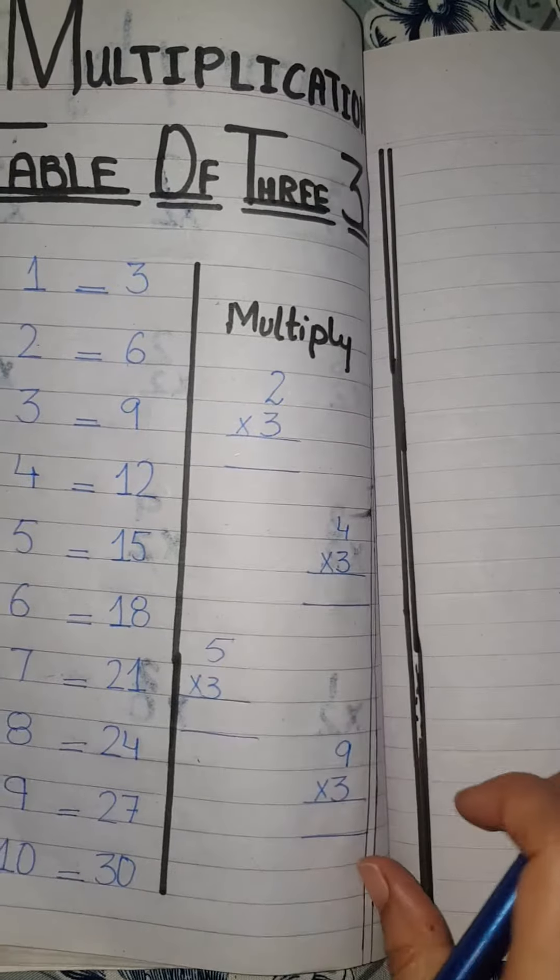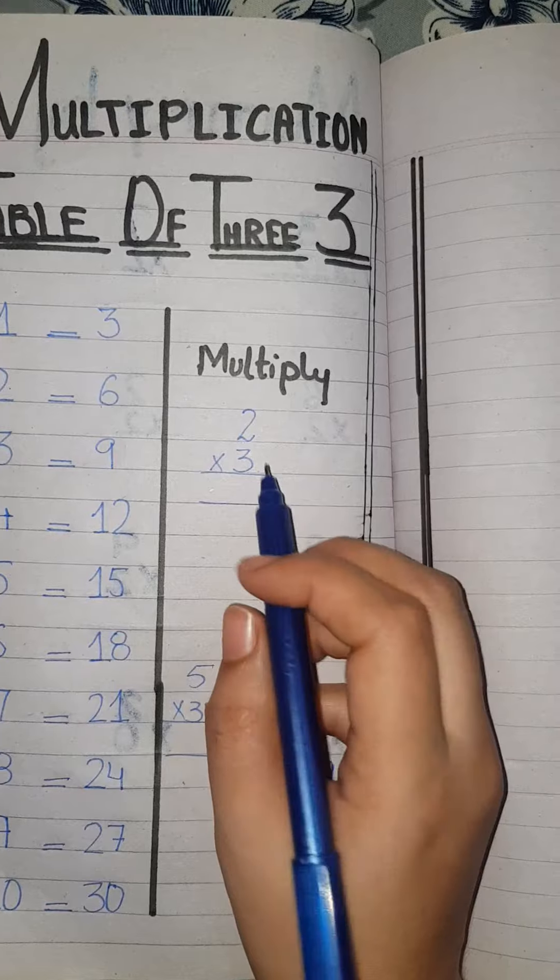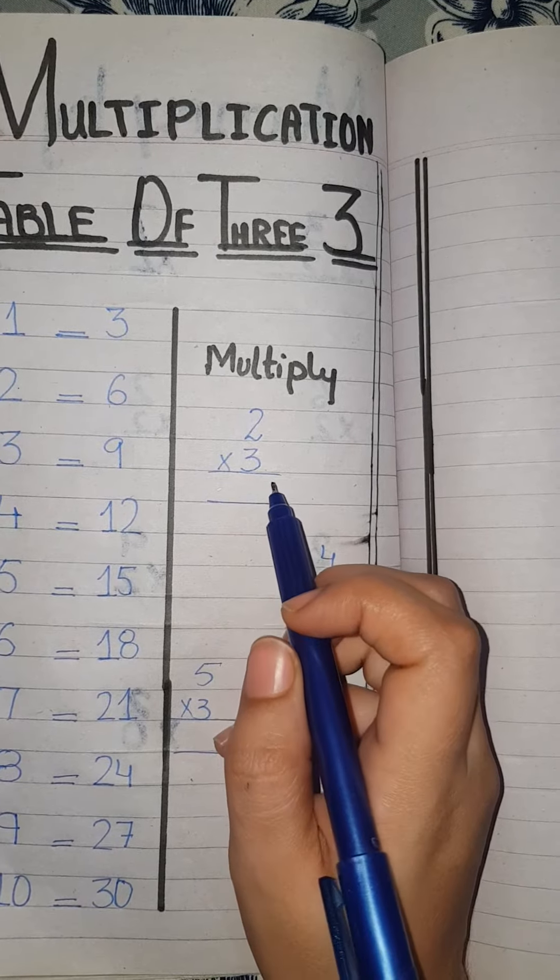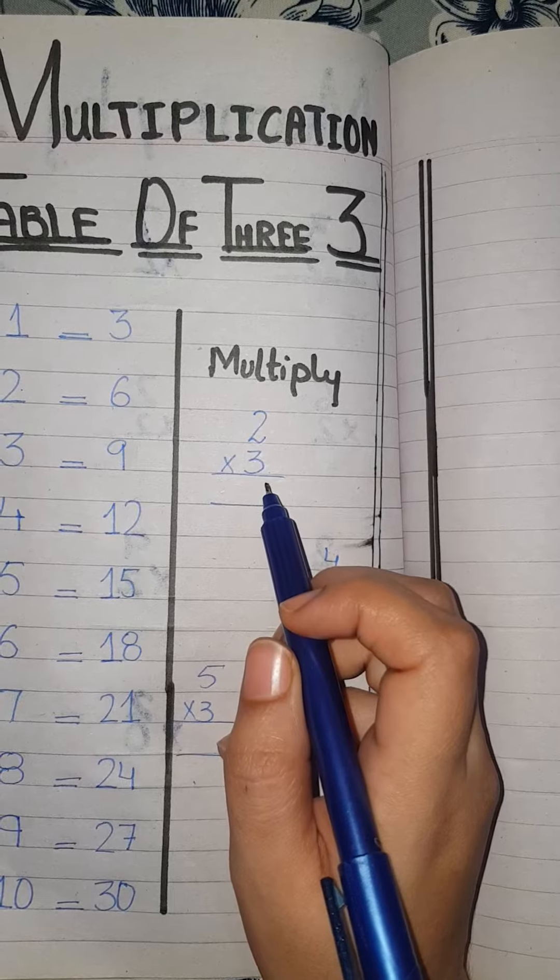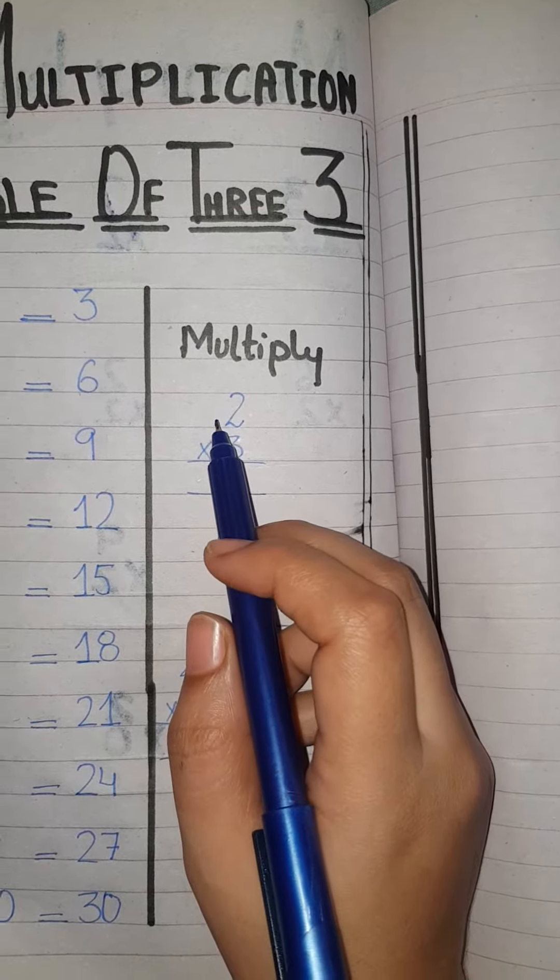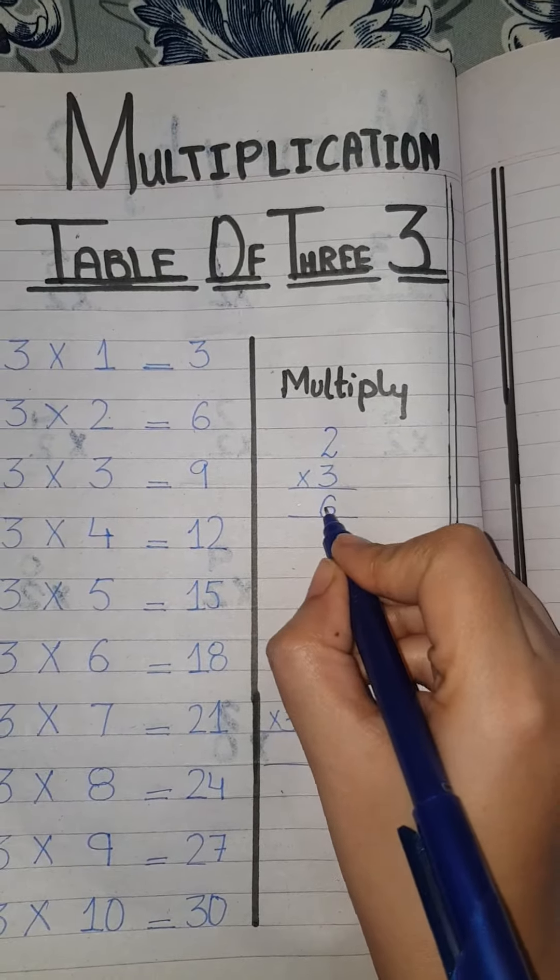Now we move towards multiplication questions. 3 times 2 equals 6. The answer is 6.